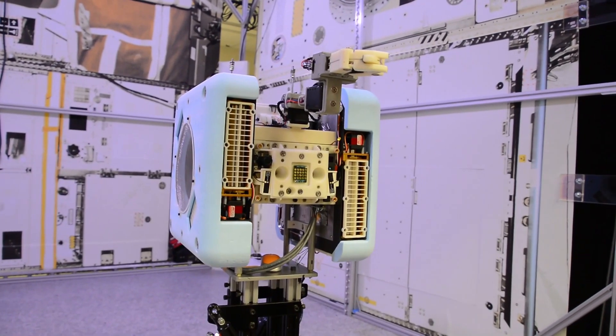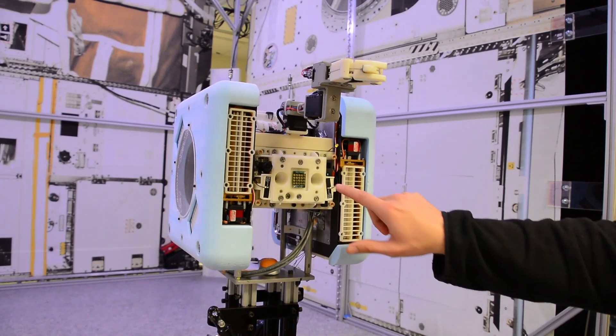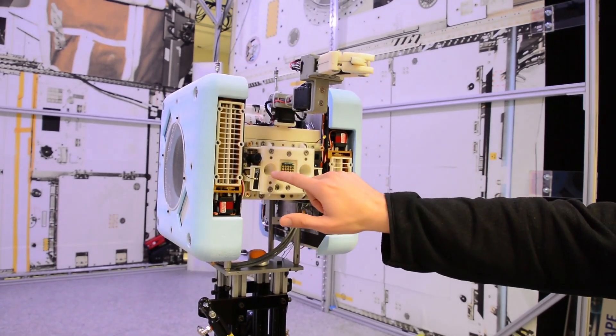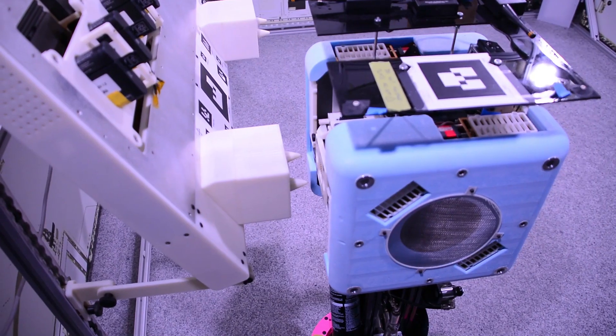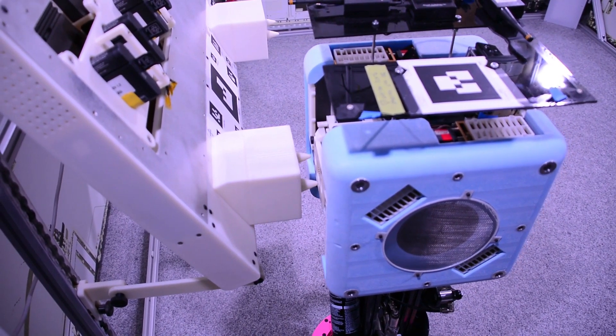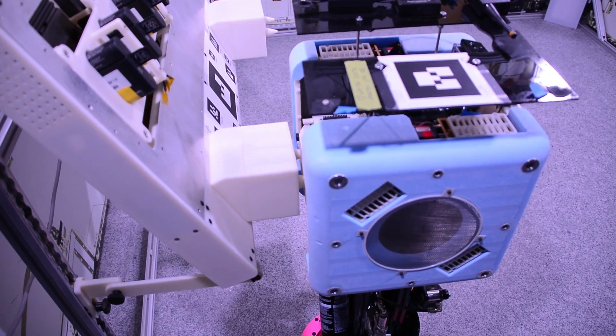Here we're looking at the aft side of the Astrobee robot. First thing to notice is we have these cups here that match two lances that are on the docking station. So as the Astrobee moves in close to the docking station, those features will help it align properly.